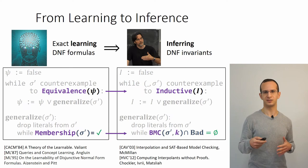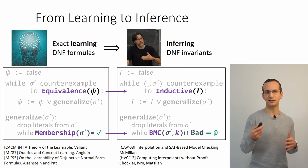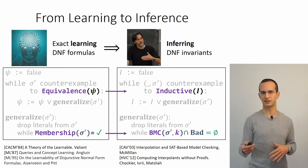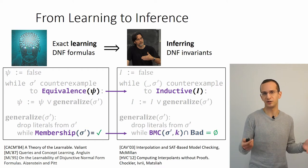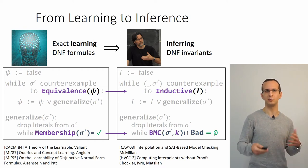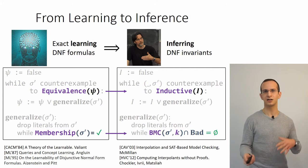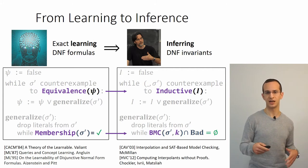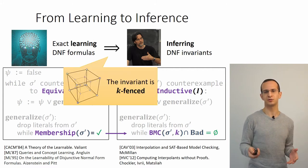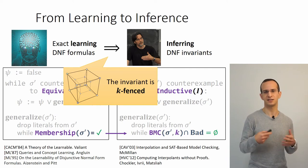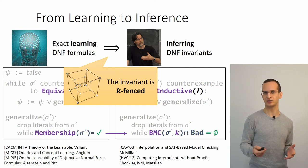What we're going to see is that this algorithm is an incarnation of an algorithm from exact learning—a classification algorithm essentially—and we can lift complexity results from exact learning to the invariant inference algorithm. But this only works when the invariant satisfies an extra property: that it is K-fenced. So let's start talking about the fence condition.